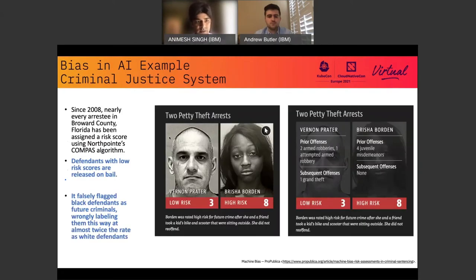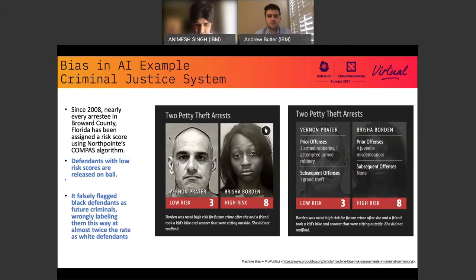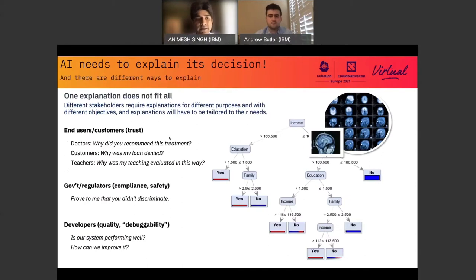To give you an example: since 2008, nearly every arrest in Broward County, Florida was being assigned a criminal sentence based on whether they are likely to re-offend. It was based on Northpointe's COMPAS algorithm, and based on research that you can trace, that dataset was found to be heavily biased towards non-Caucasians.